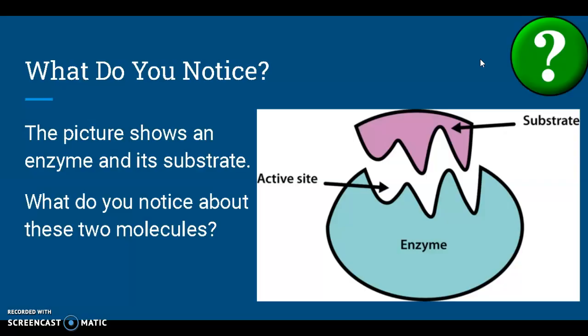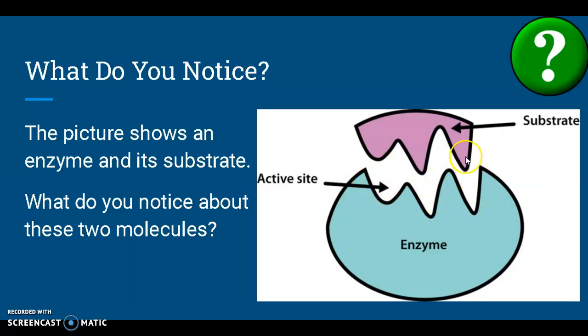Hello, everybody. Today we're going to continue talking about these very special molecules called enzymes. In class, we have been talking about how enzymes work — how enzymes will break down or build molecules called substrates. The substrate will bind with the enzyme at a special place called the active site, so that the enzyme can either break the substrate or put two substrate molecules together. The active site has a shape that matches the shape of the substrate molecule so they can fit together like puzzle pieces.